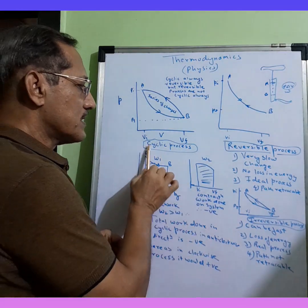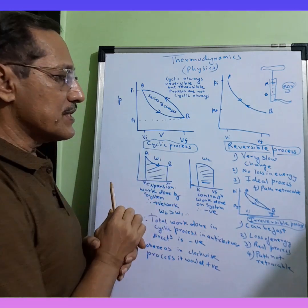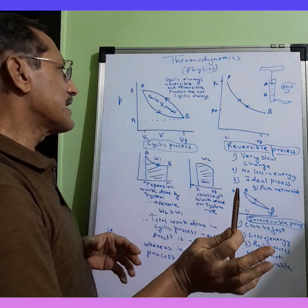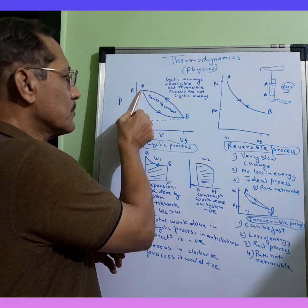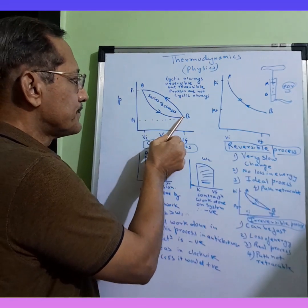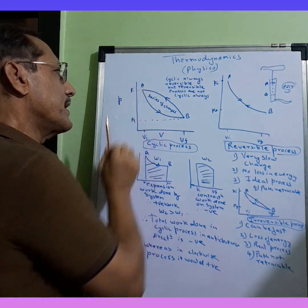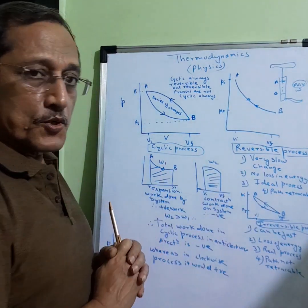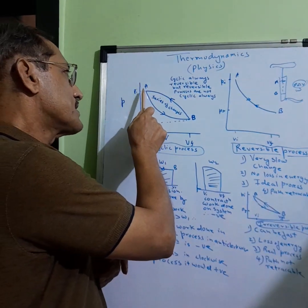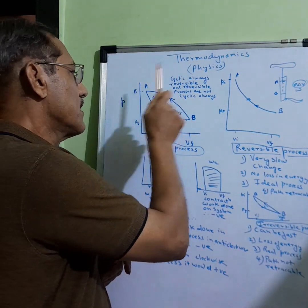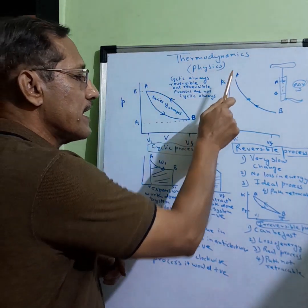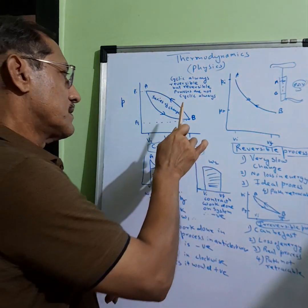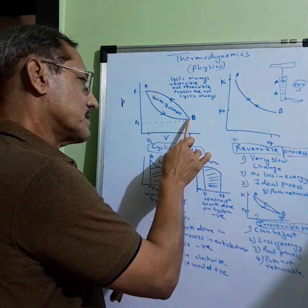Let's talk about cyclic process. What happens in a cyclic process is it goes from A to B and then returns back to A. Now when we compare cyclic process and reversible process, let's compare state A of cyclic with state A of reversible — they have the same energy state.